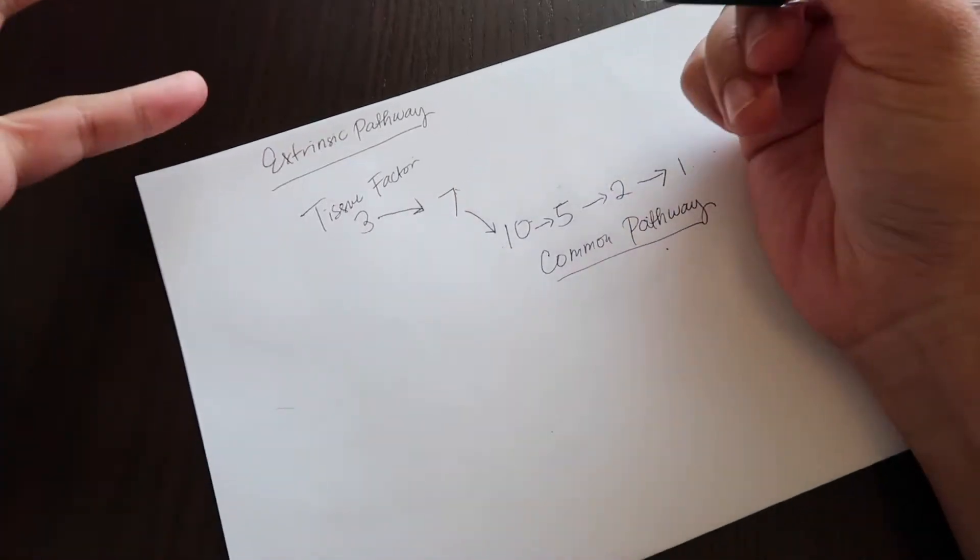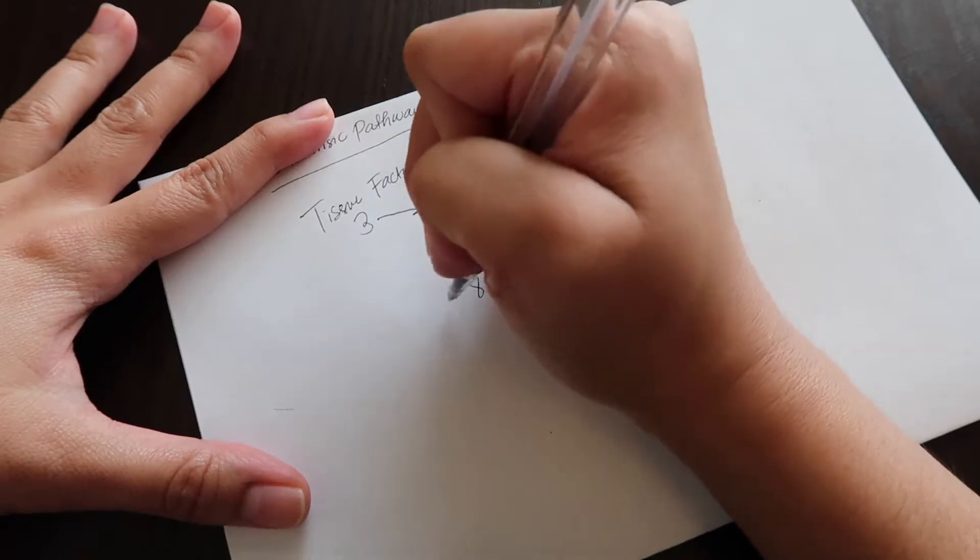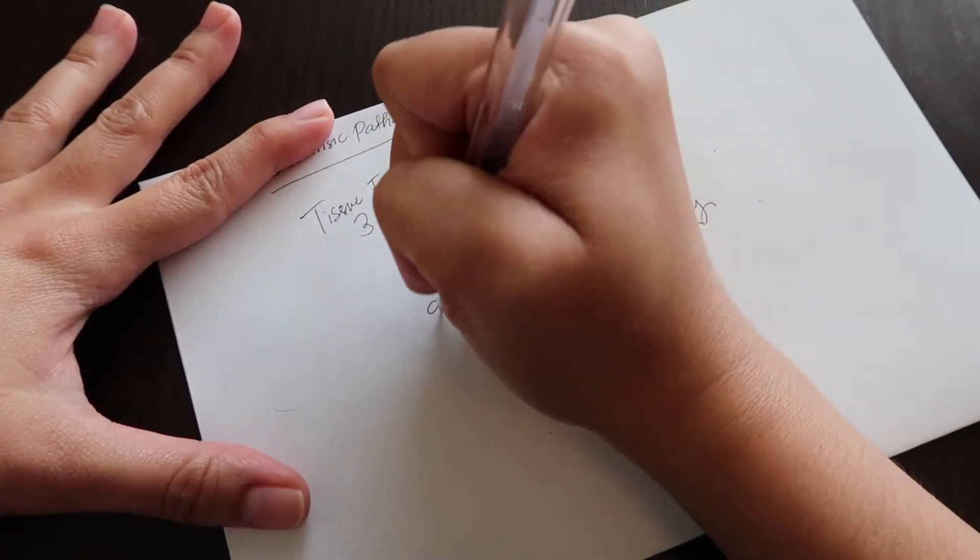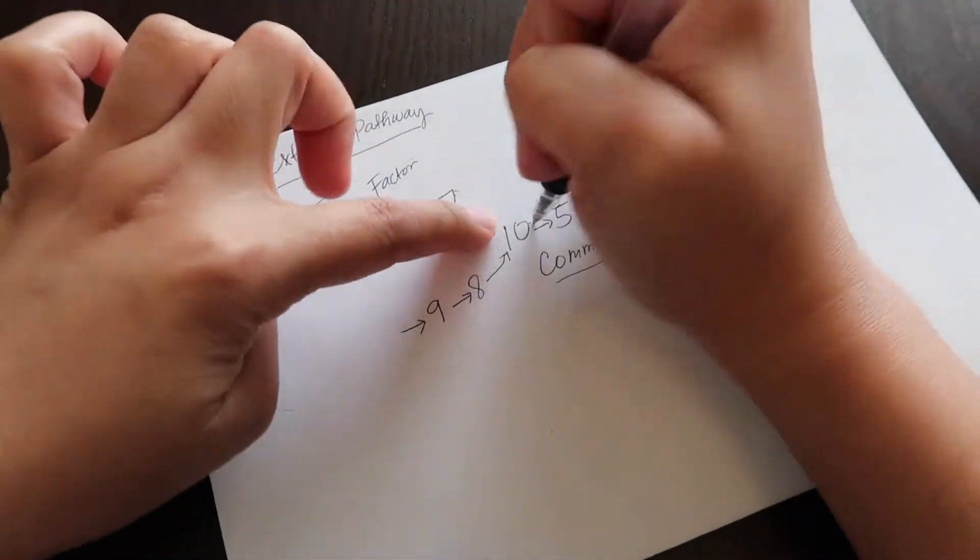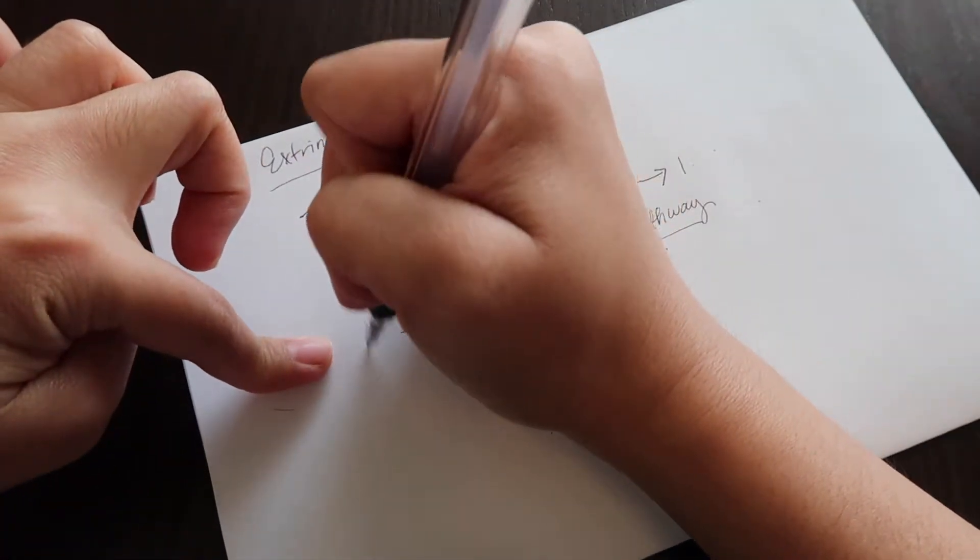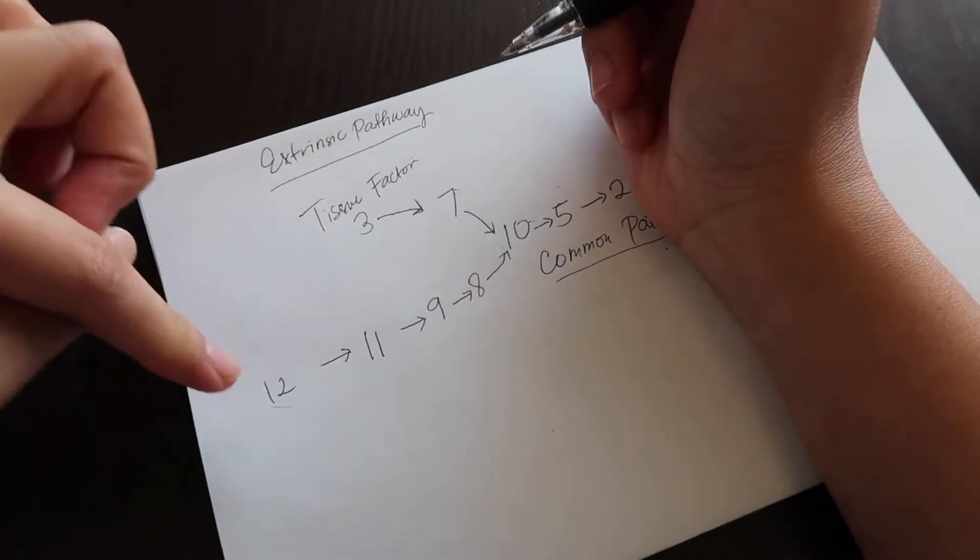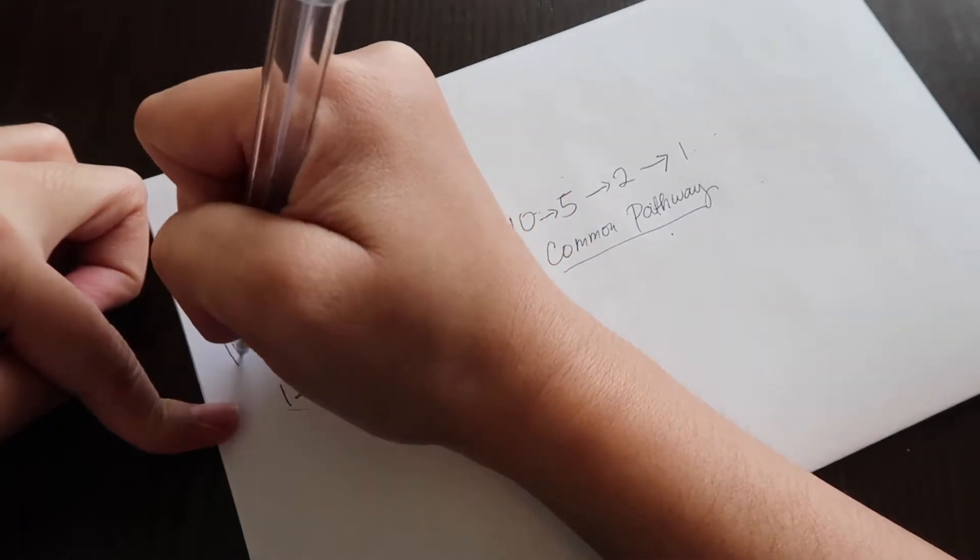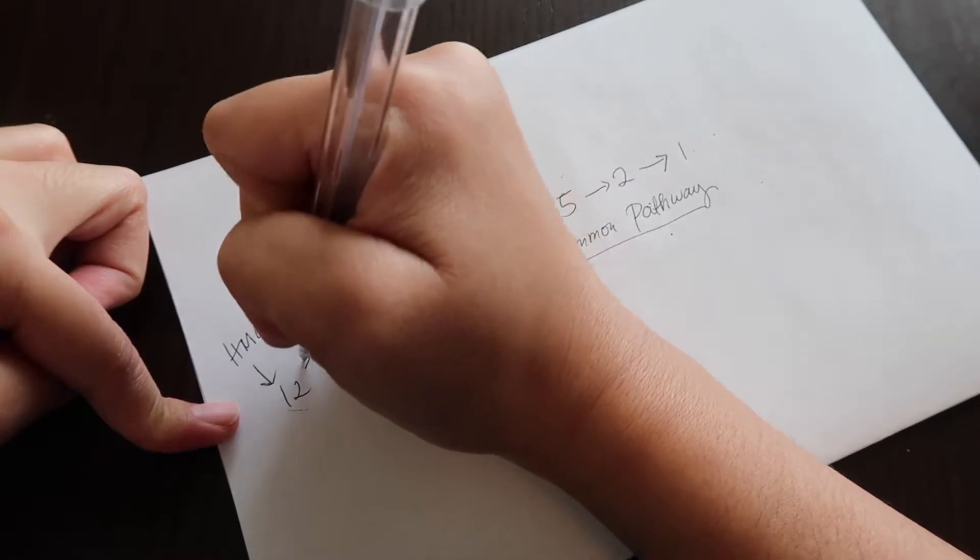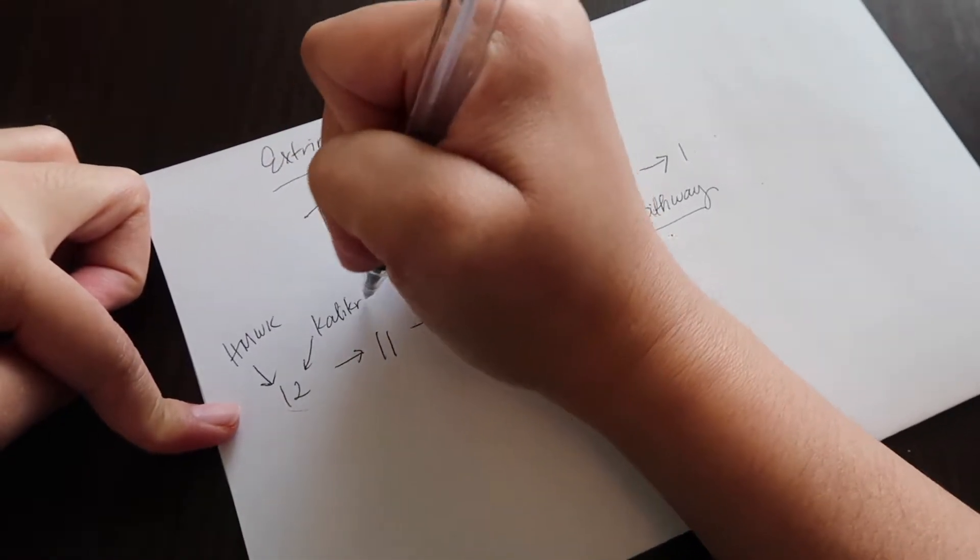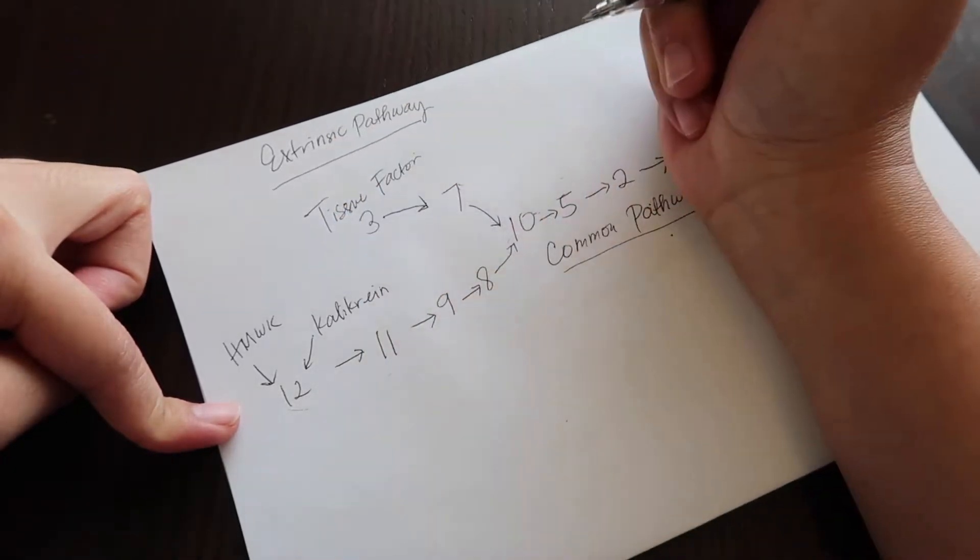What's next to seven? It's eight, nine. So where do you put them? They're in the intrinsic pathway. So you get 8, 9, and then 10 is already here. So what's next to 10 is 11 and 12. And then at the end you also write HMWK and kallikrein. They're involved in the intrinsic pathway.